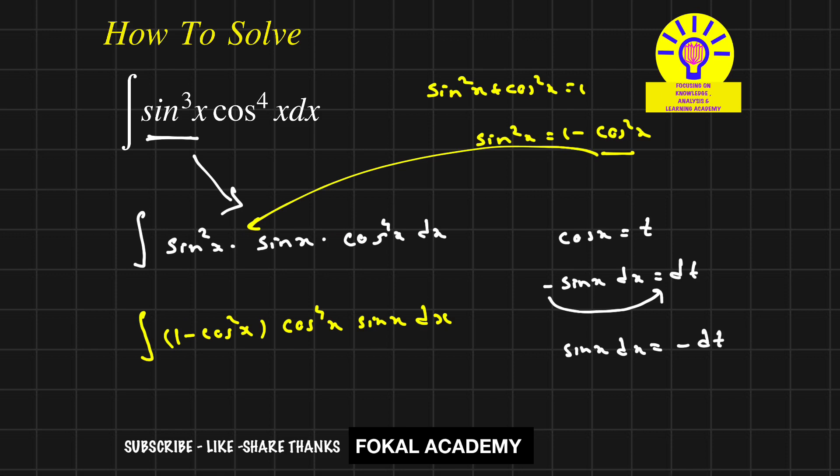Substitute cosx = t in this equation, so the integral becomes integral of (1 - t²)·t⁴·(-dt). Now expand these two terms and multiply minus for this equation.